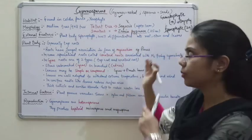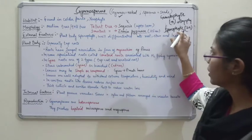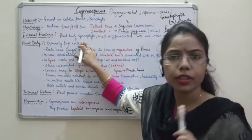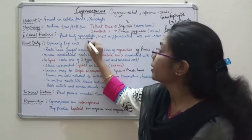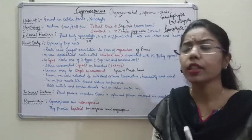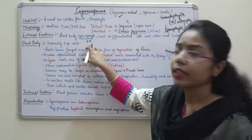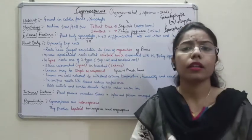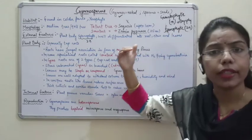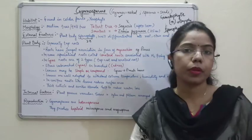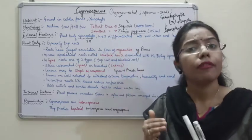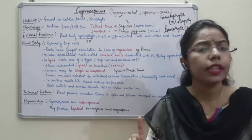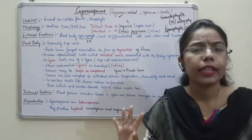In gymnosperm, compared to thallophyta, bryophyta, and pteridophyta, the plant body is well differentiated. In thallophyta, the body was thallus-like with no proper true roots, stems, and leaves. In bryophyta the body is also somewhat thallus-like but more advanced. In pteridophyta, some root-like and shoot-like structures appear, and xylem and phloem are present but less functional. In gymnosperm, the plant body is well differentiated into proper roots, stems, and leaves.